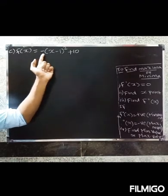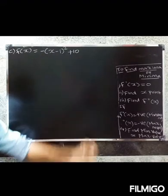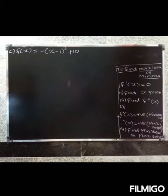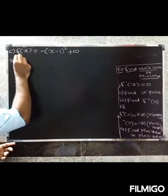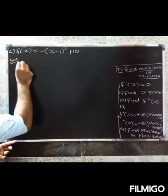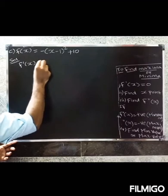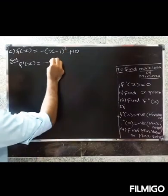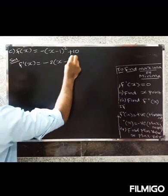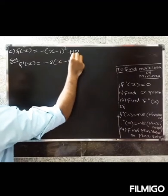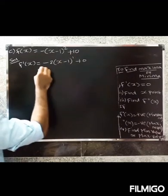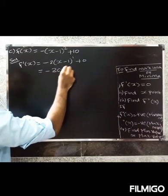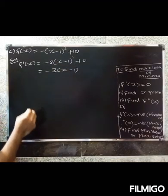Third question: f(x) = -(x - 1)² + 10. First, find f'(x). Differentiating using the power rule: f'(x) = -1 × 2(x - 1)^(2-1) = -2(x - 1). So f'(x) = -2(x - 1).